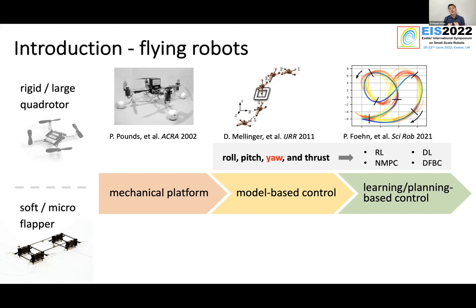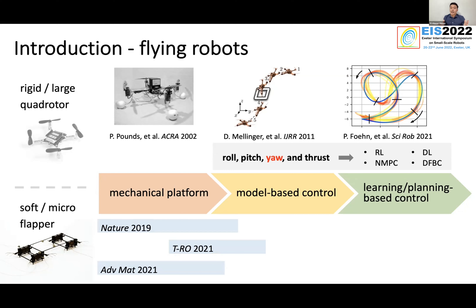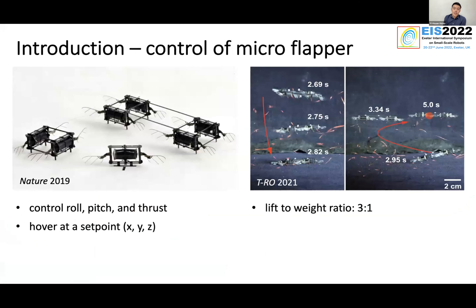If we turn our attention to our soft microflapper, this happened very recently. The first soft microflapper appeared roughly three years ago in a Nature paper in 2019, and only three papers have appeared since then. But those papers pretty much covered the mechanical design and some part of model-based control. In particular, we can control the roll, pitch, and thrust of our tiny robot independently — meaning we can hover at a single set point in 3D space, as you may have seen from Professor Kevin Chen's talk. We can also achieve a lift-to-weight ratio around 3 to 1.